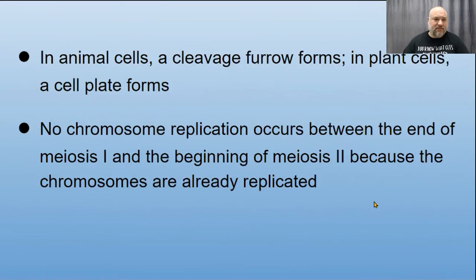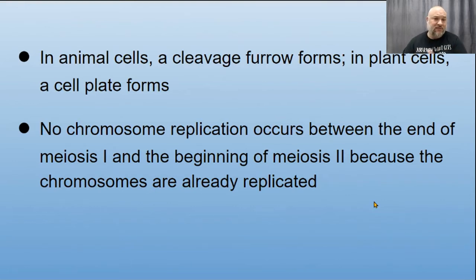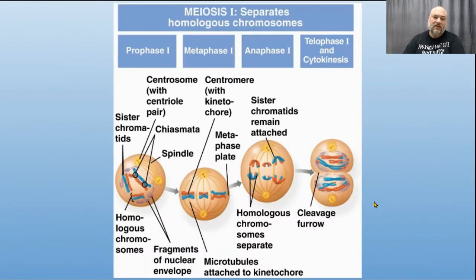In animal cells a cleavage furrow forms; in plant cells a cell plate forms — the same as in mitosis. Here's another key difference: whereas after mitosis you'd go into G1, S, G2, and repeat, in meiosis you go straight from meiosis I into meiosis II — no growth, no replication, just keep splitting.